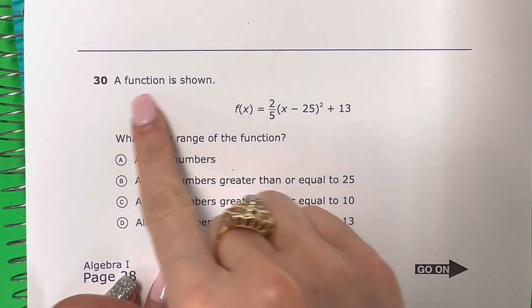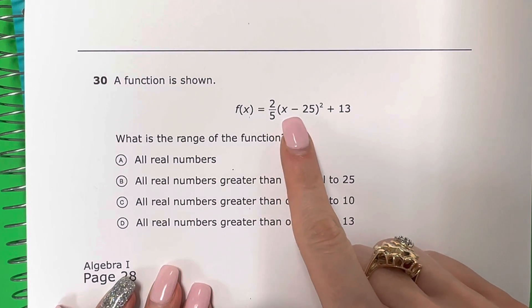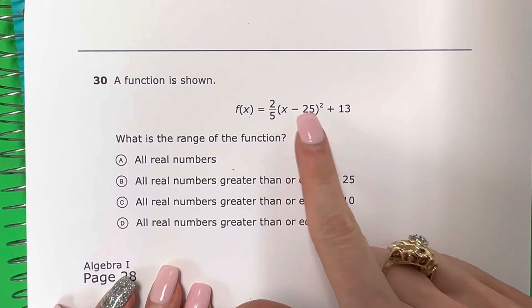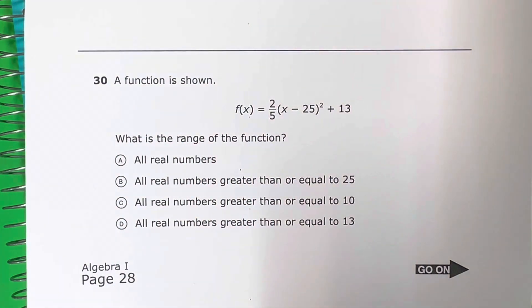Question 30. A function is shown: f(x) equals two-fifths times (x minus 25) squared, plus 13. What is the range of the function?